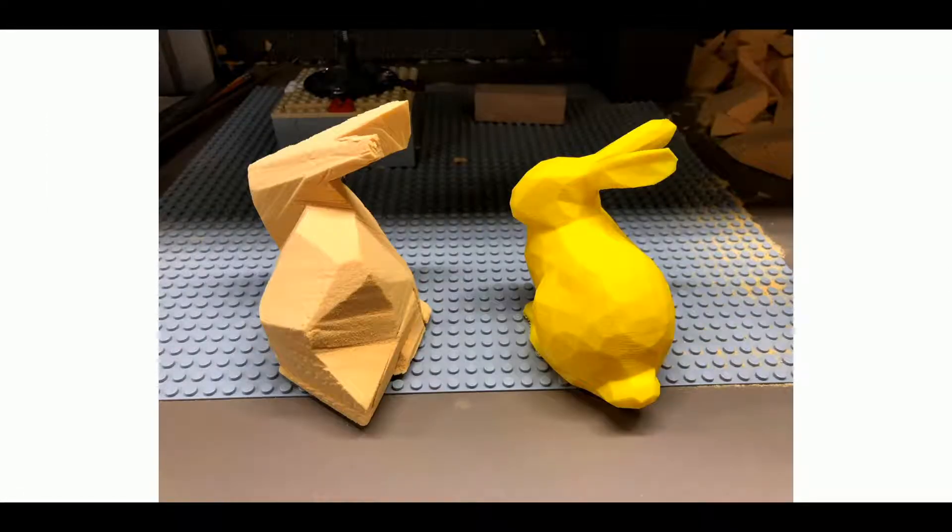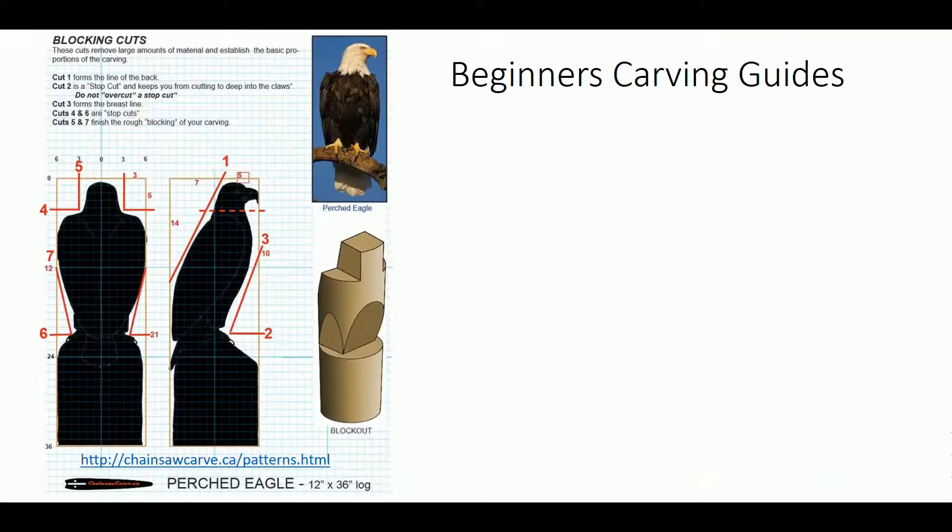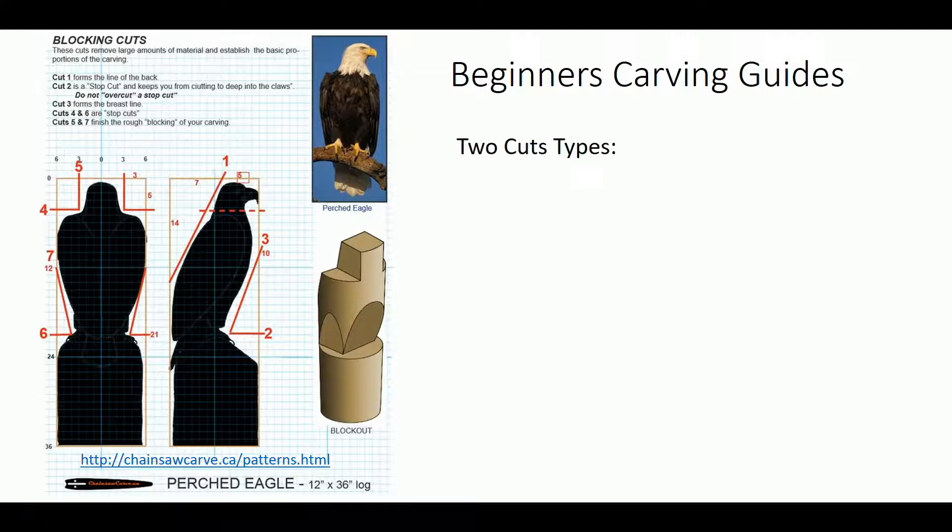This is the result of the rough carving stage for this model. For the method to generate these cutting instructions, we looked to carving guides for beginners, like this chainsaw carving guide. We noticed that they have two types of cuts: the straight cuts or blocking cuts,